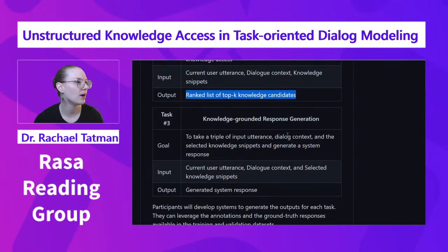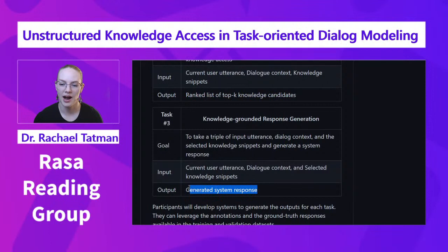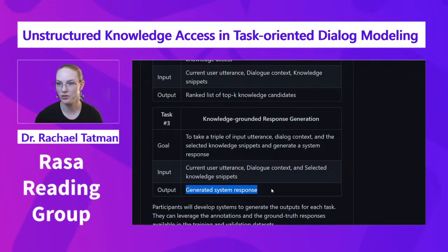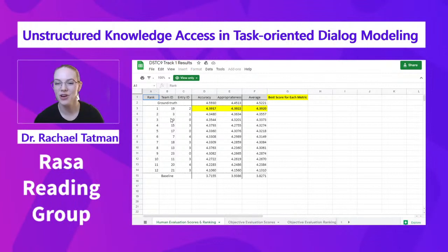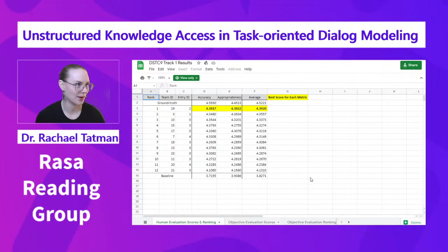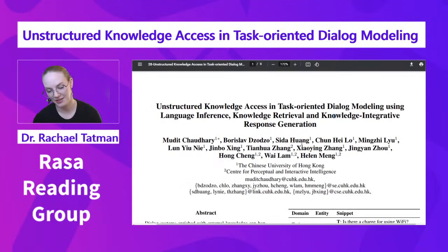The final task is knowledge-grounded response generation — you take the information you get and serve it back to the user as some sort of generated response. For the purpose of the shared task, these were evaluated using human evaluation. They did share the results, though it's incomprehensible to me since I have no idea what the team IDs or entry IDs map to. Some people did better, some did worse, everybody did better than baseline. This is one of the teams that did the task.